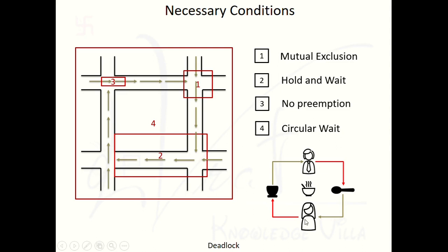No preemption: they can't say to each other forcefully 'please release the spoon, I want to drink soup.' They can't stop each other forcefully — they can only request the remaining resources. Circular wait: due to the hold and wait of one resource each, this entire situation leads to circular wait.